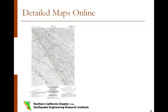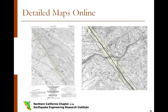The statewide collection of digital maps of Alquist-Priolo earthquake fault zones is available online. The maps show sufficient detail to identify streets and other important features. From this map of the Hayward Fault running through Oakland on the left, we can zoom in on the area in the vicinity of the Caldecott Tunnel, shown on the right. The close-up map shows highways 13 and 24, the BART Tunnel, and the East Bay MUD Claremont Tunnel all crossing the Hayward Fault near Lake Temescal in Oakland.